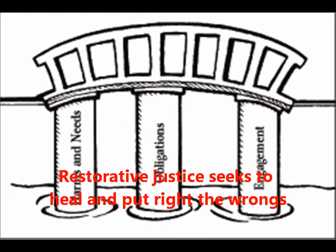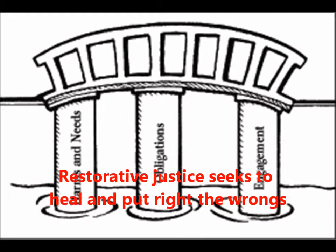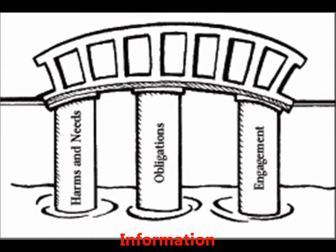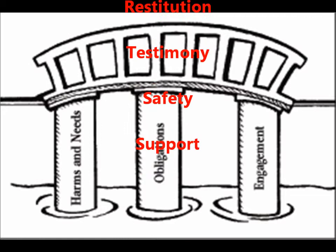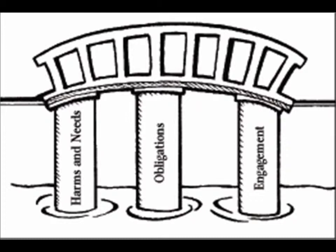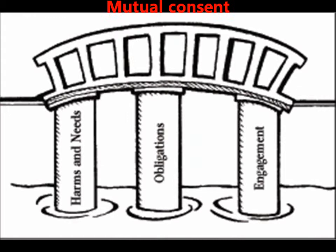Restorative justice seeks to heal and put right the wrongs. The needs of victims for information, validation, vindication, restitution, testimony, safety, and support are the starting points of justice. The process of justice maximizes opportunities for exchange of information, participation, dialogue, and mutual consent between victim and offender. Also, the offenders' needs and competencies are addressed.